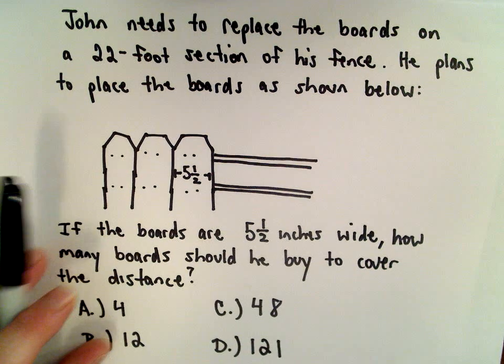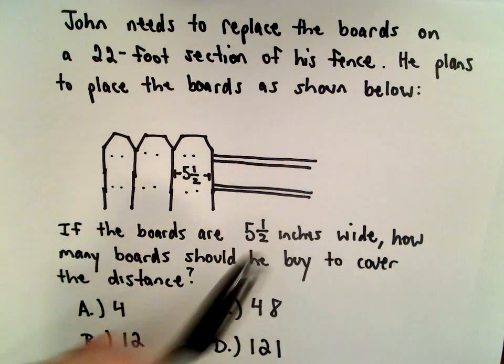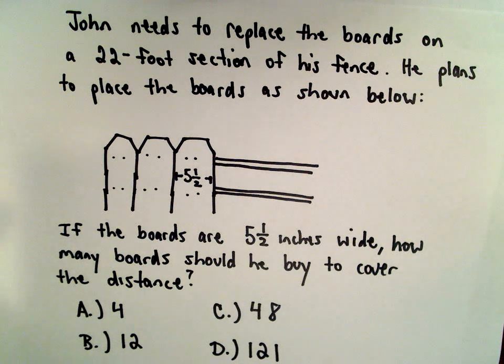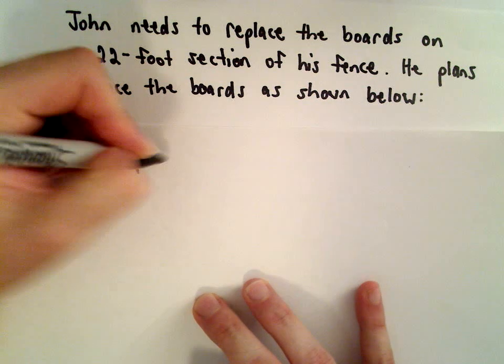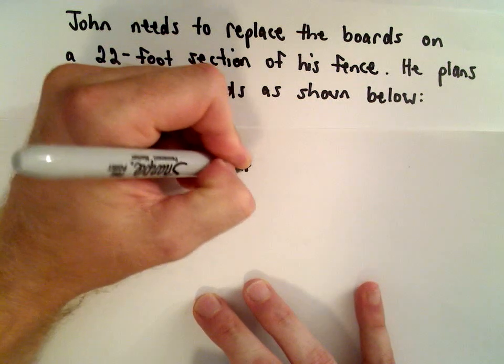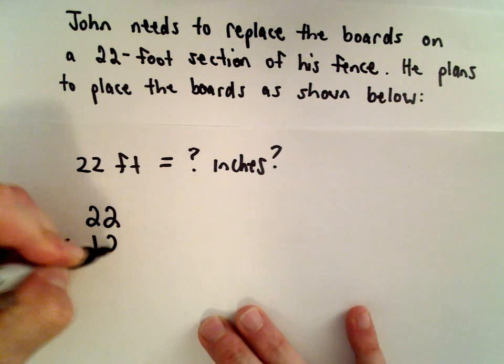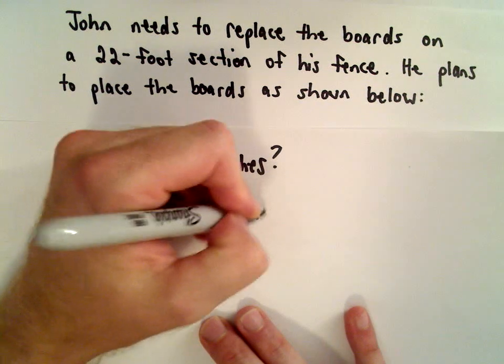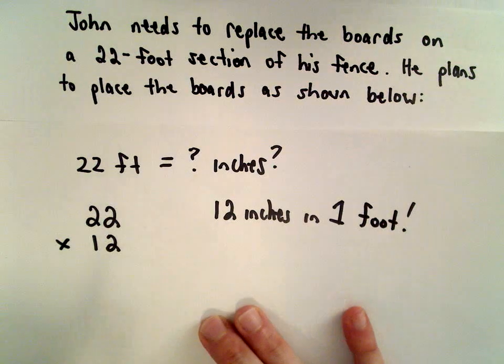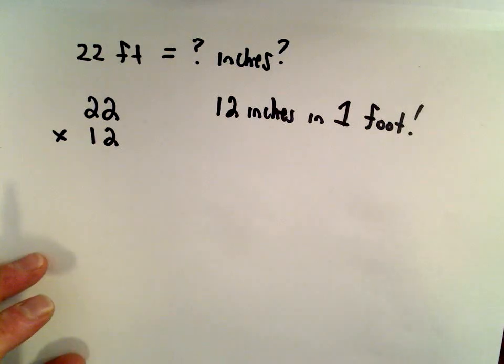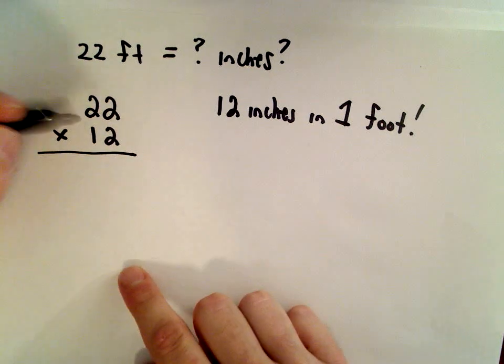The first thing to notice is we've got feet - we're talking about 22 feet and five and a half inches - so we need to convert things. So 22 feet, I want to know that equals how many inches? Well, recall that there are 12 inches in a foot. The good old American system of not using base 10.